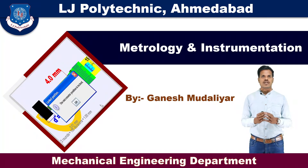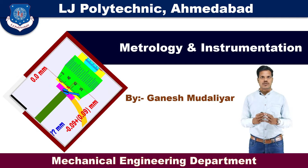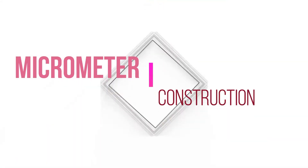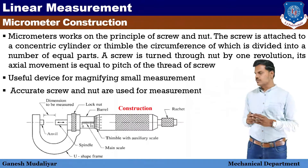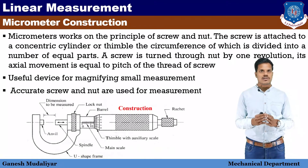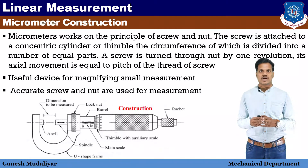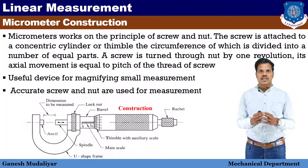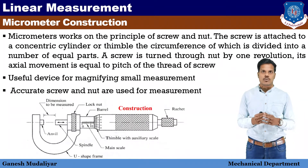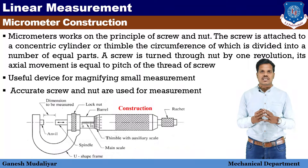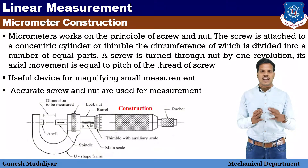It is one of the devices used for measuring linear measurement. The micrometer works on the principle of screw and nut. The screw is attached to the concentric cylinder or thimble, the circumference of which is divided into a number of equal parts. A screw is turned through a nut by one revolution and its axial movement is equal to the pitch of the thread of the screw. And it is used for magnifying the small measurement.